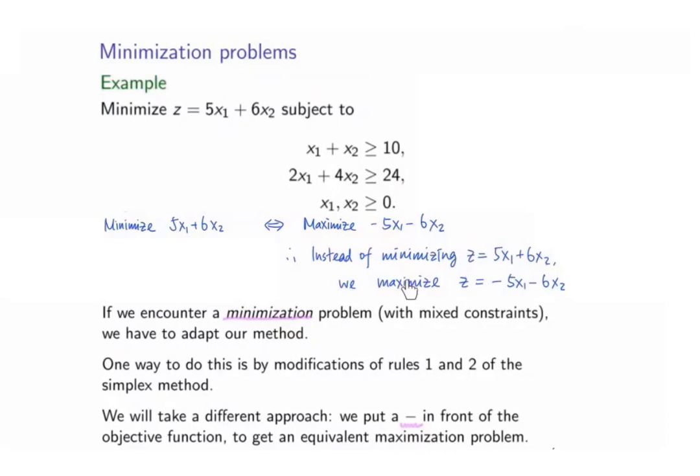Therefore, instead of minimizing 5x1 plus 6x2, we maximize negative 5x1 minus 6x2. But still, we will call this new expression as z, but this z is different from the original z that we referred to when we were minimizing 5x1 plus 6x2. Please be careful about this point.